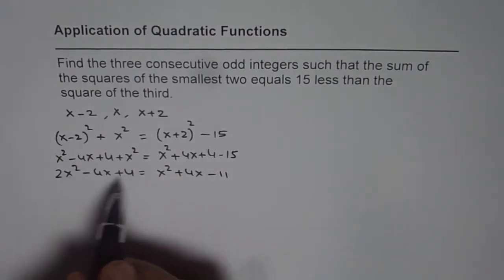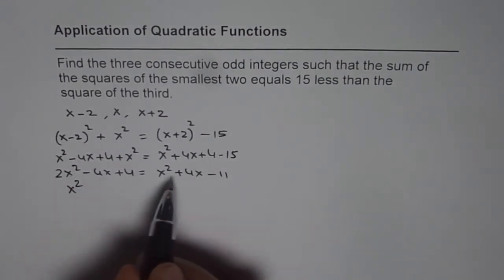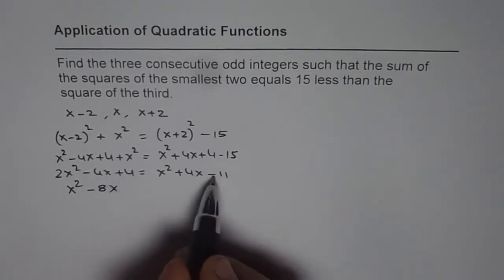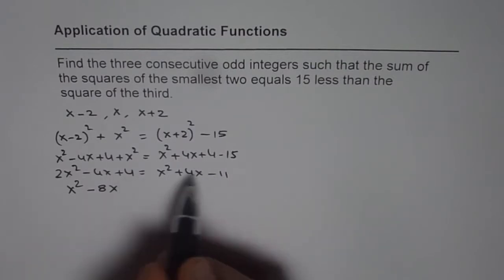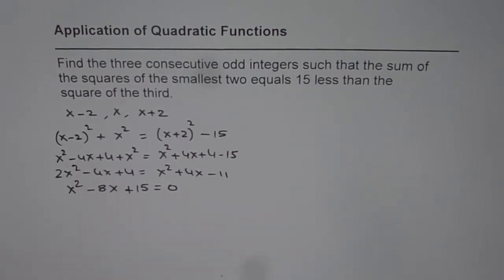Let us bring them to one side. 2x² - x² is x². 2x² - 4x - 4x gives us -8x, plus 4 and plus 11 gives us +15, equals 0. So x² - 8x + 15 = 0.